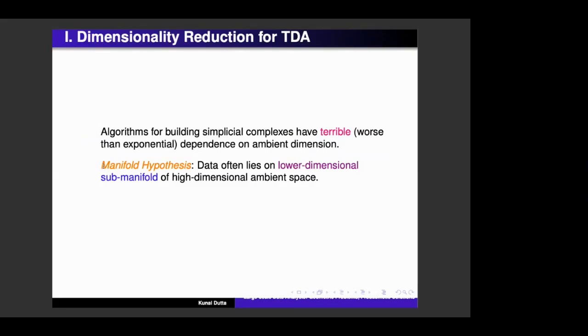So there is one hypothesis, which is very useful, which is very common in AI and machine learning, which is called the manifold hypothesis, which says that the data is often believed to lie on lower dimensional submanifolds of a high dimensional ambient space.